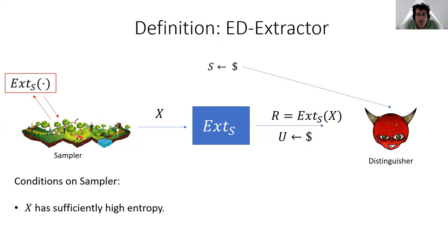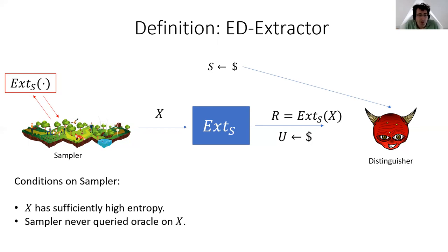We have to put conditions on the sampler. The first is that the output x should have a sufficiently high level of entropy — this is the standard condition for randomness extractors. The additional condition is that the sampler must never have queried the extractor on the sample x that it outputs. This is a necessary condition: if it could query x, it could skew the distribution and choose an x such that the extracted output starts with zero. It's also a natural condition, because we're assuming the sampler uses fresh entropy to produce x, so x should not equal any previously queried value. The previous queries can affect the distribution, but fresh entropy should go into the new sample.